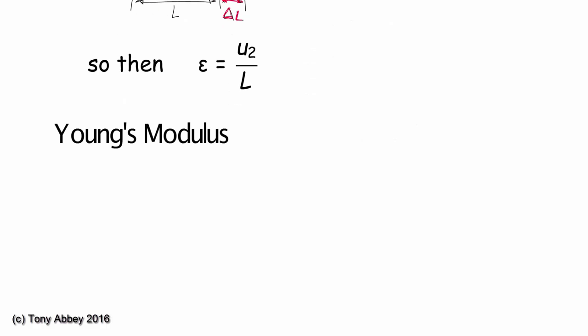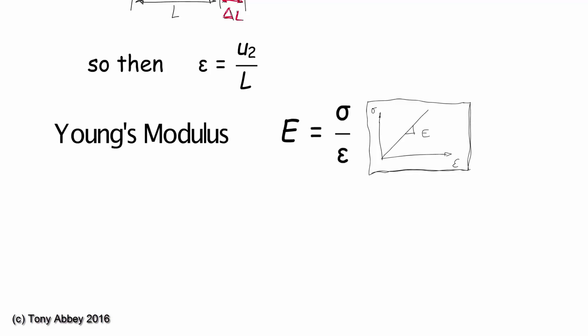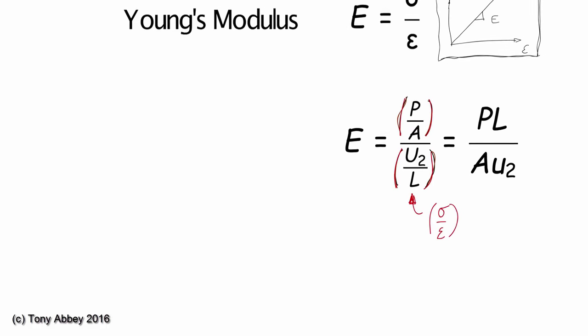We need the Young's modulus definition. Remember, it's just the relationship between stress and strain. And now we just substitute in the terms for stress and strain and we get this equation. Using this, we can solve for the unknown deflection U2.